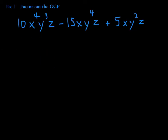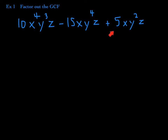Here's our first example. We want to factor this trinomial — it's a trinomial because there are three terms. So when we factor out the GCF, which stands for the greatest common factor, we first look at the coefficients only. The coefficients are 10, negative 15, and positive 5. The GCF with respect to the coefficients is the largest number that divides into 10, negative 15, and 5 — that would be 5.